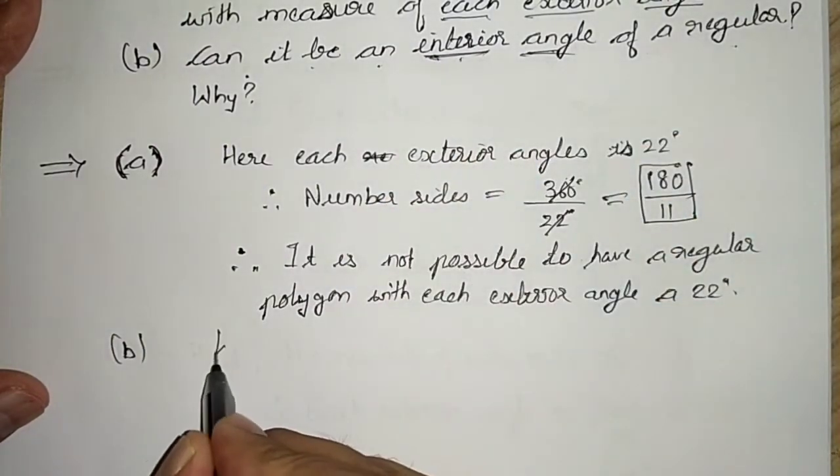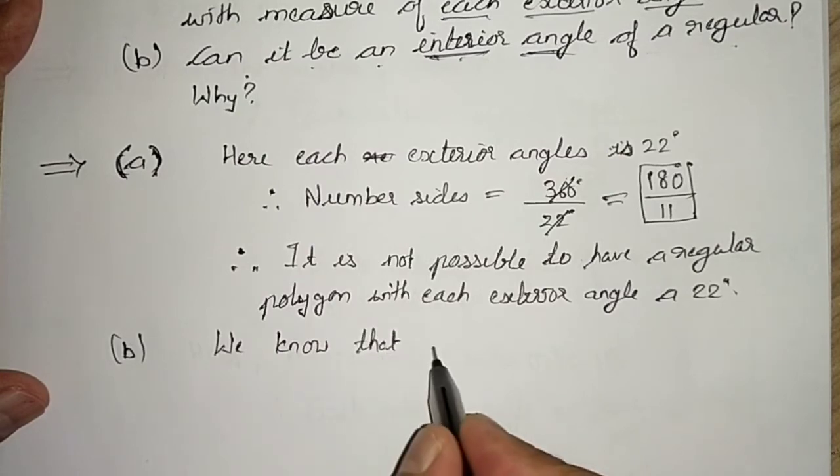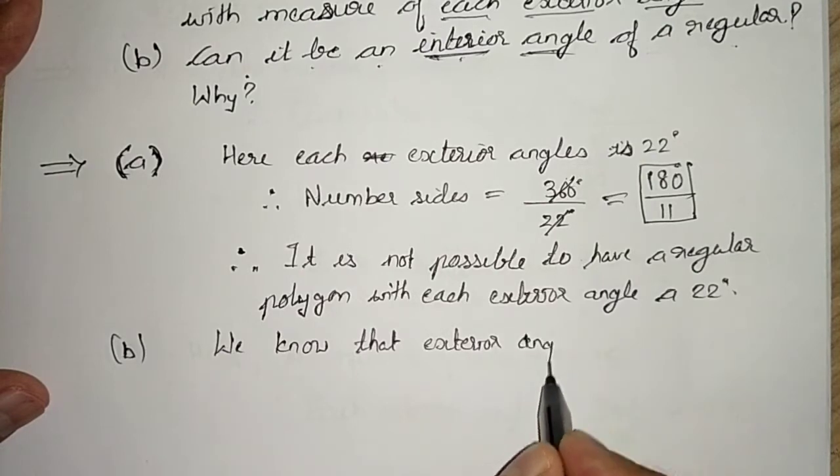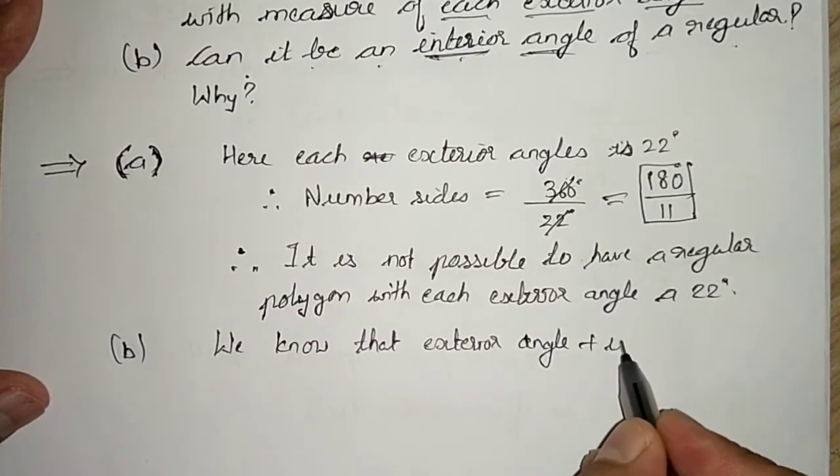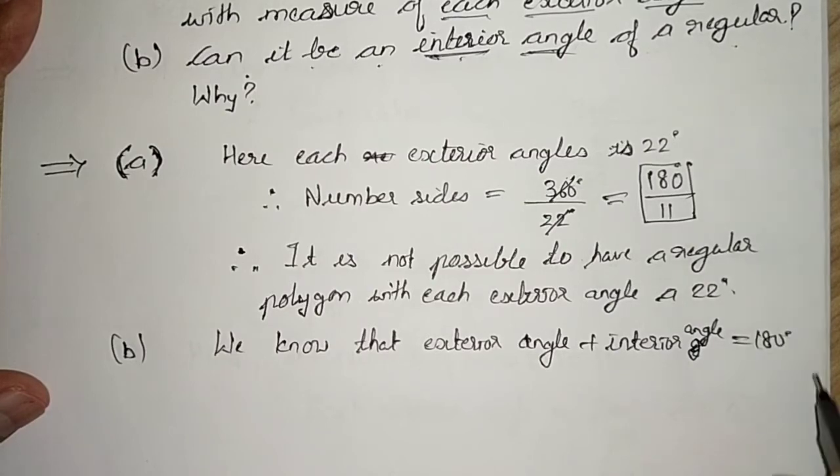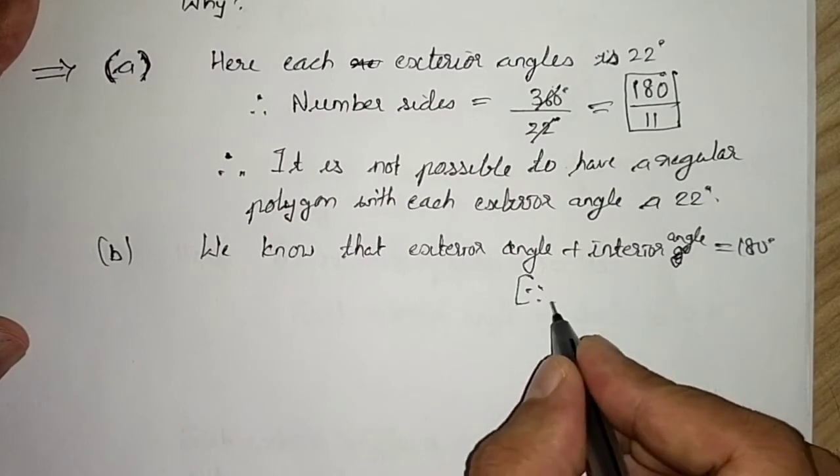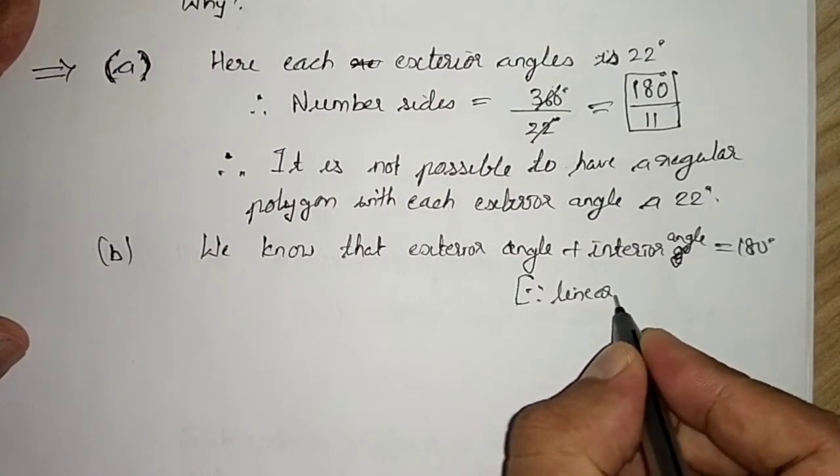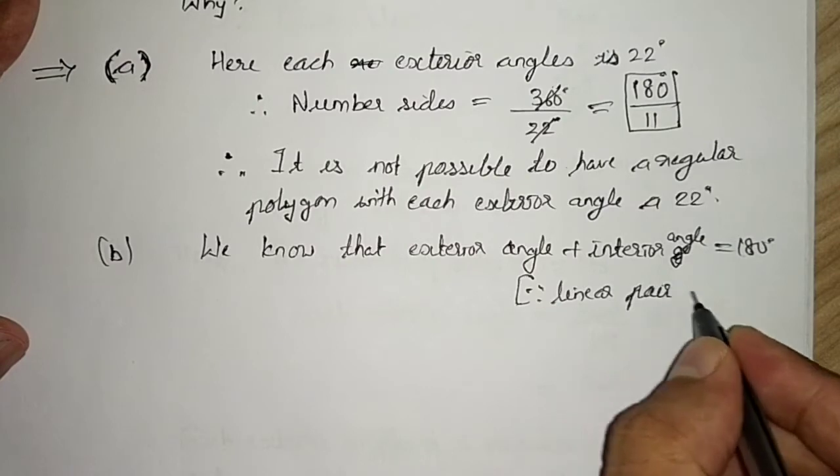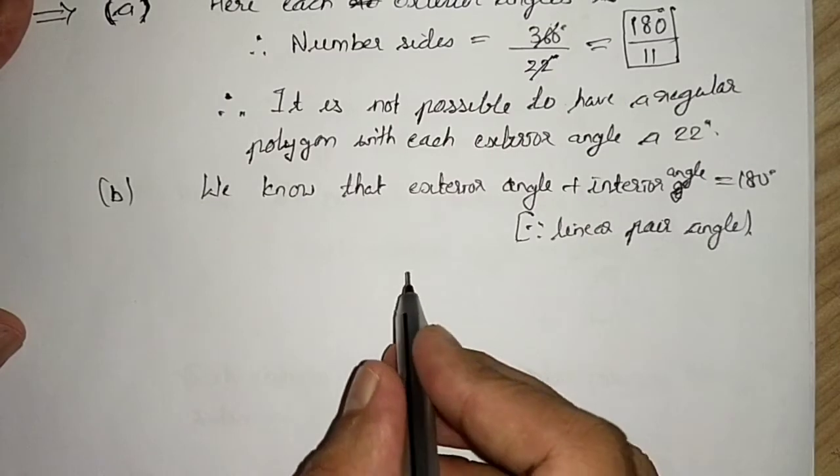So what we will do? We know that exterior angle plus interior angle is equal to 180 degrees. That you know, I have discussed it with you before. Why? Because both are linear pair angles.